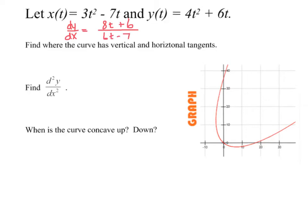Vertical tangents are where the derivative is undefined. We look for where the denominator is 0, and that is at t equals 7/6. Horizontal tangents occur when the derivative is 0 — that's where the numerator would be 0. In our case, that's at negative 6/8, or reduced to negative 3/4.